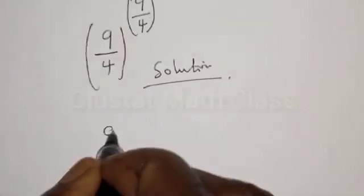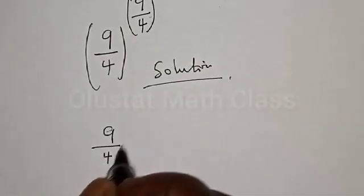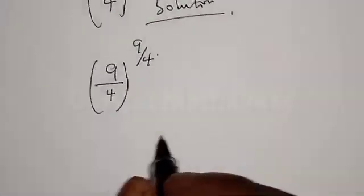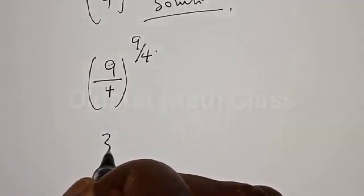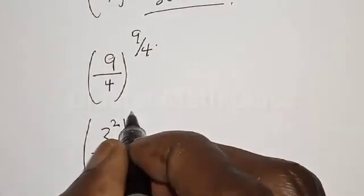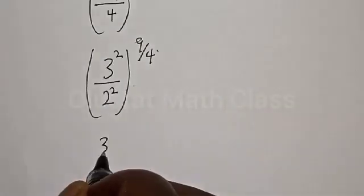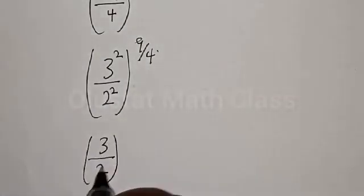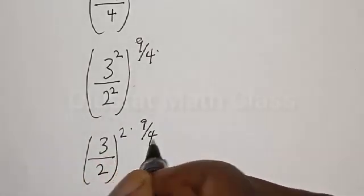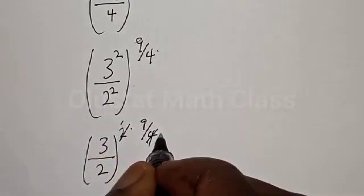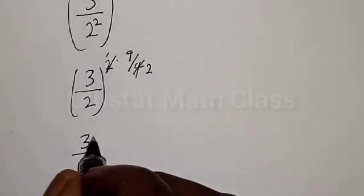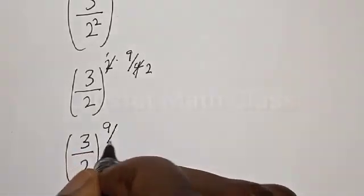We have 9 over 4 raised to the power 9 divided by 4. This can be expressed as 3 squared divided by 2 squared, raised to the power 9 divided by 4 — that is, 3 divided by 2, all squared, then multiplied by 9 divided by 4. Simplifying the exponents, we get 3 divided by 2, all raised to the power 9 over 2.